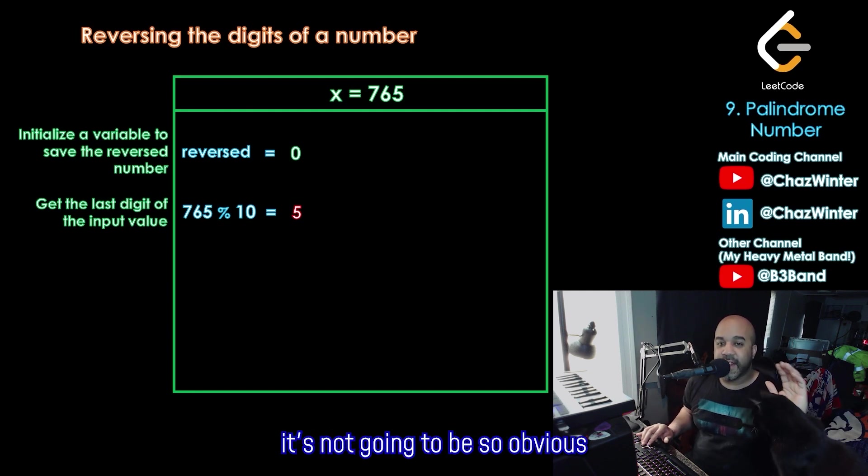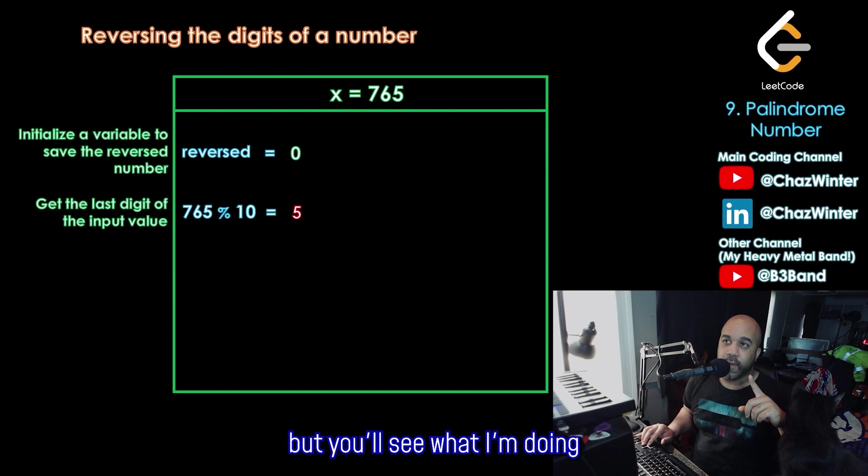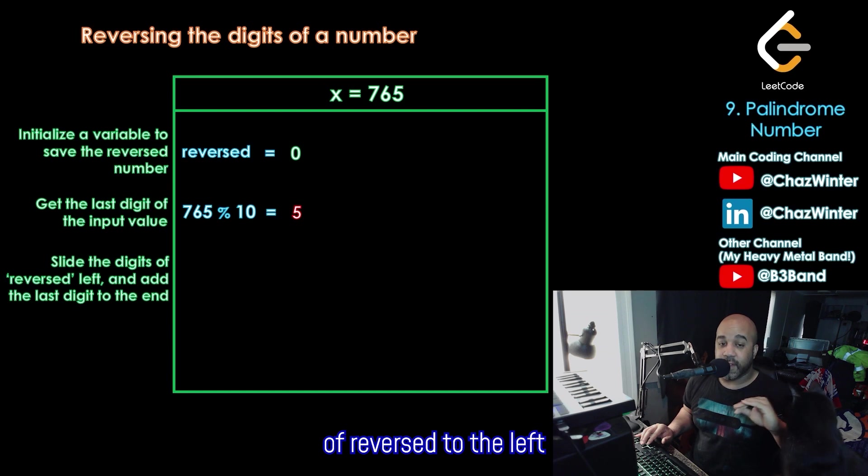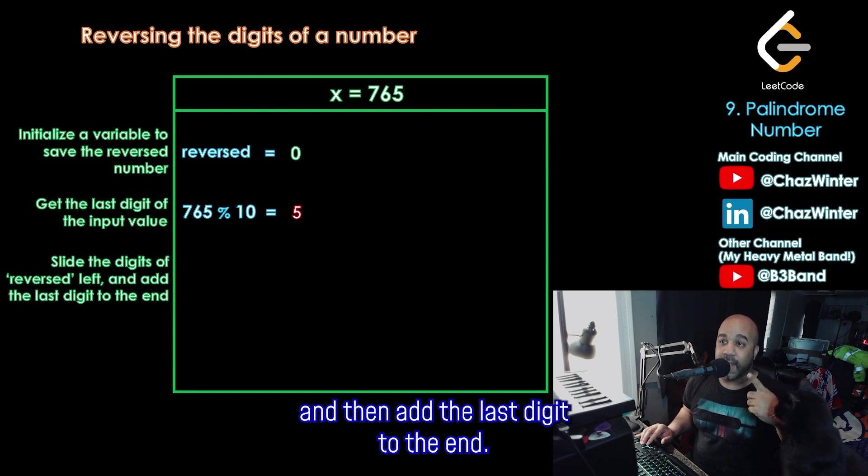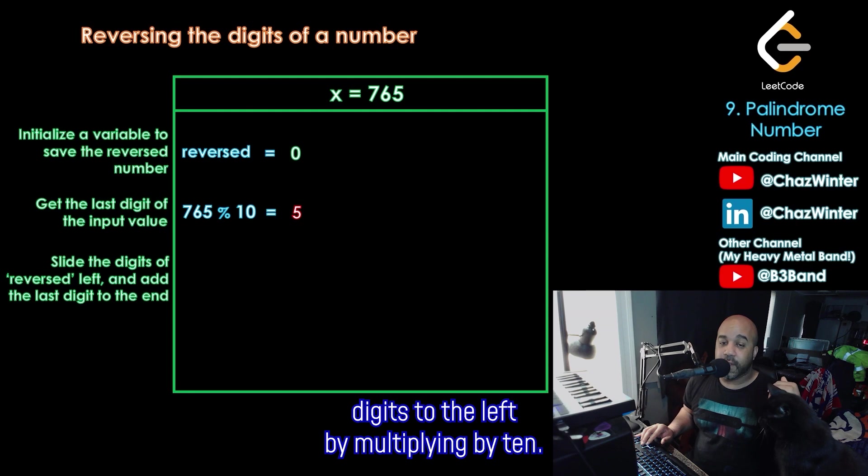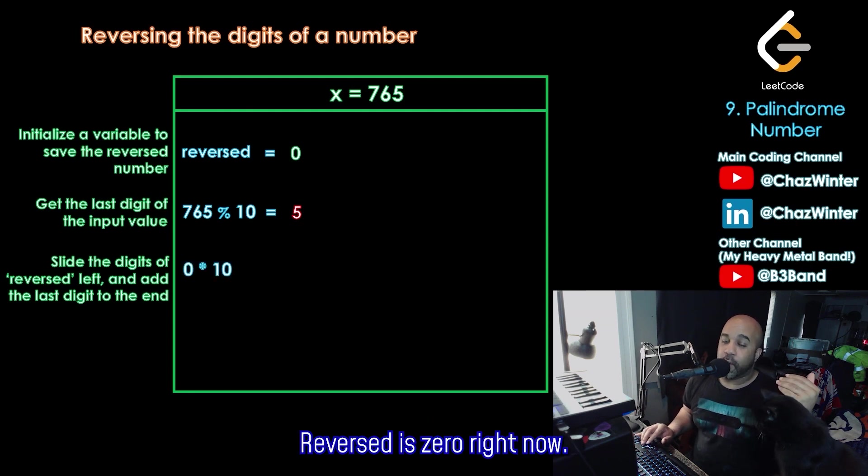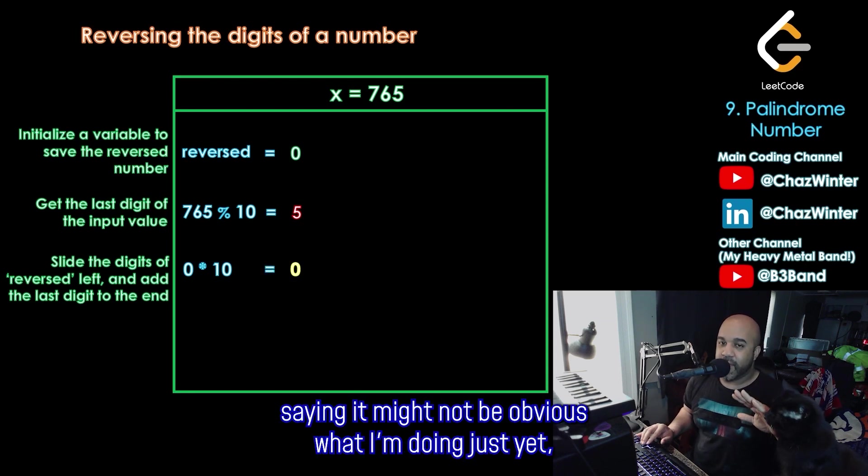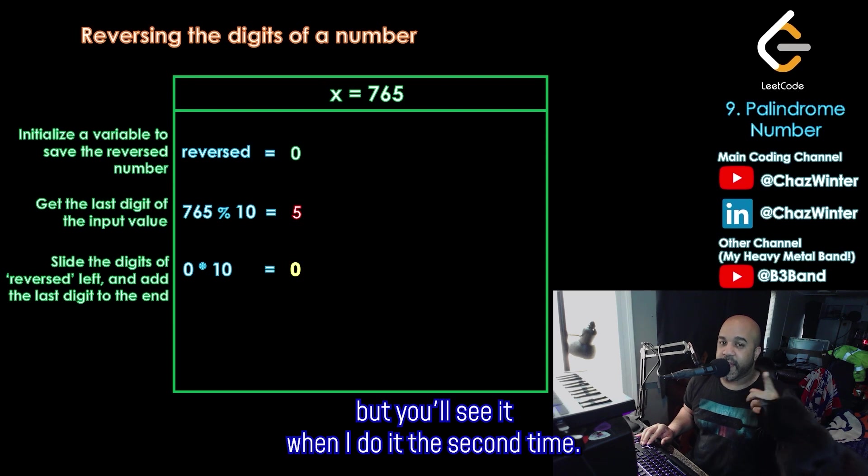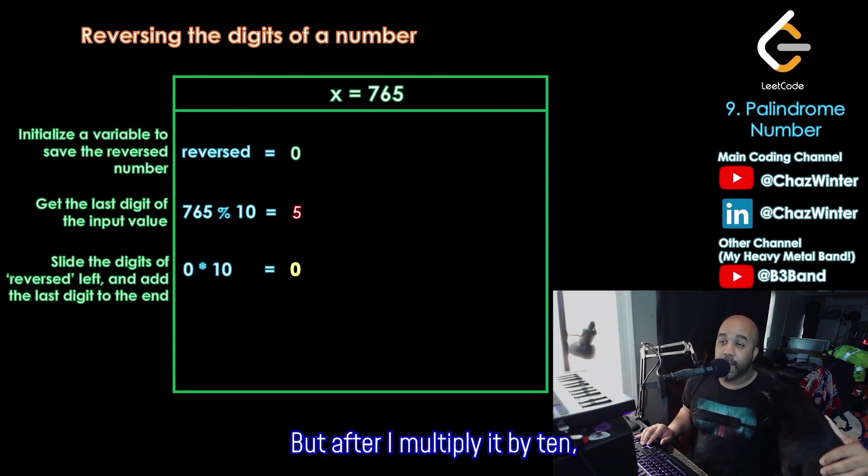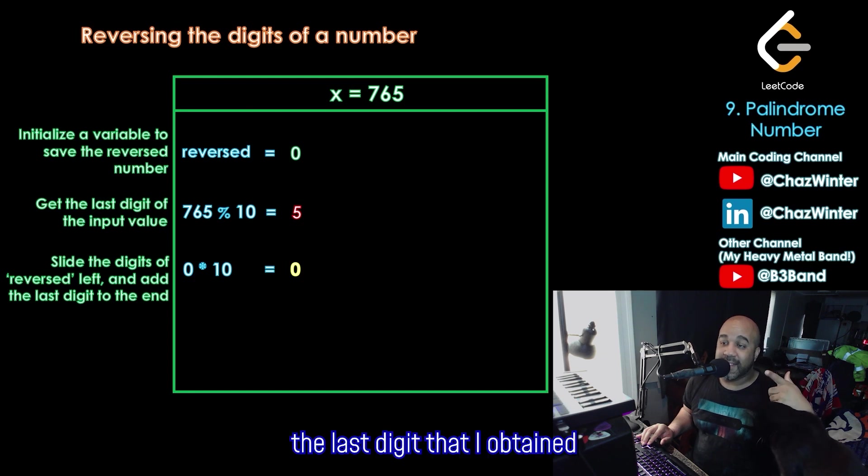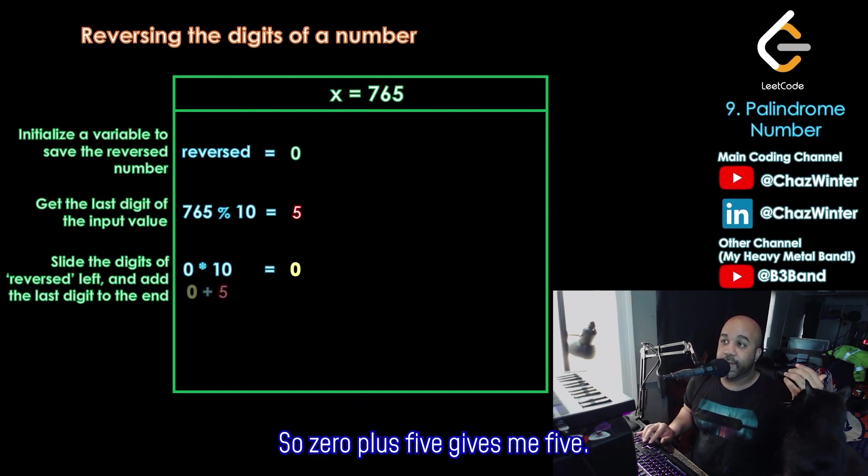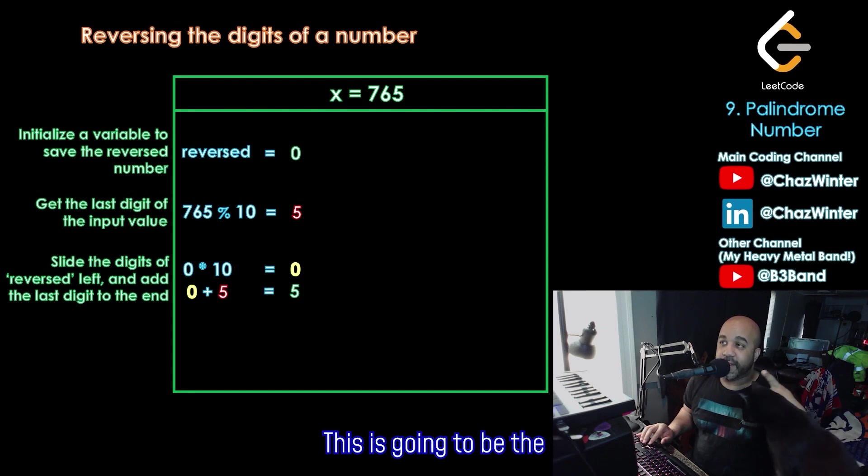So I'll take my input 765 mod 10, which should leave me with 5. And then what I'm going to do, it's not going to be so obvious from this first go around, but you'll see what I'm doing when I do it the second time. But I'm going to slide the digits of reversed to the left, and then add the last digit to the end. So we said we could slide digits to the left by multiplying by 10. Reversed is zero right now, so multiplying by 10 doesn't do anything. It's just still zero. So that's why I'm saying it might not be obvious what I'm doing just yet, but you'll see it when I do it the second time. But after I multiply by 10, I just have to add the last digit that I obtained in the previous step, which was 5. So 0 plus 5 gives me 5.